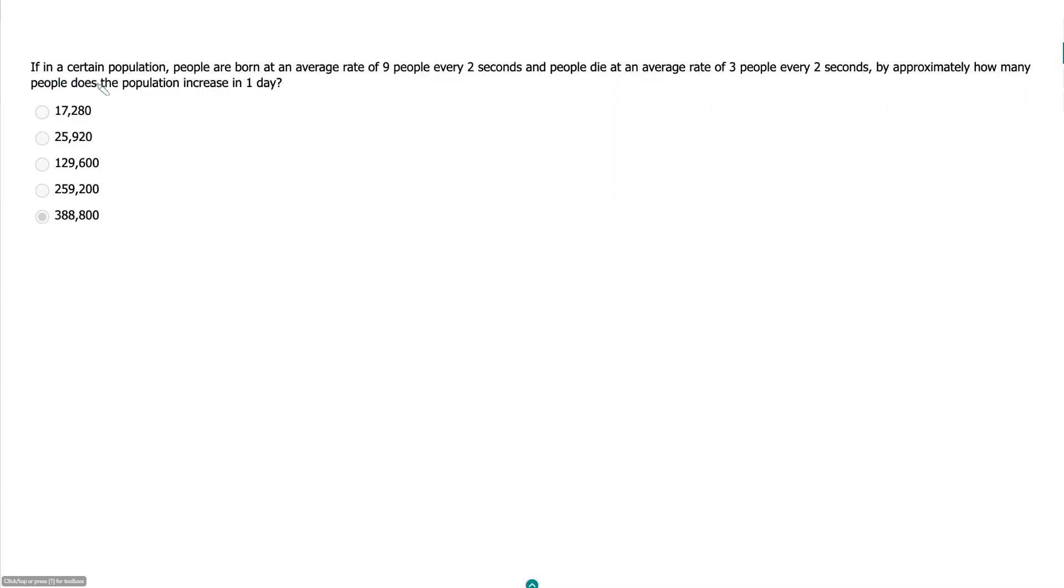In a certain population, people are born at an average rate of nine people every two seconds, and people die at an average rate of three people every two seconds. By approximately how many people does the population increase in one day?